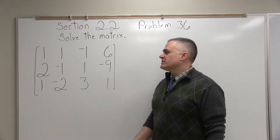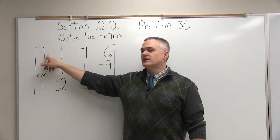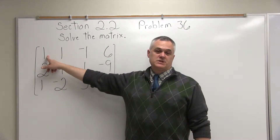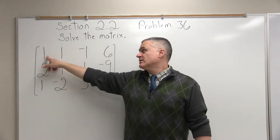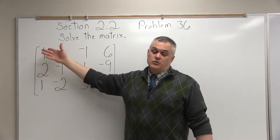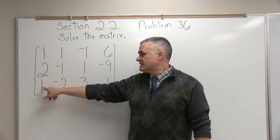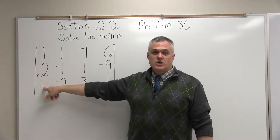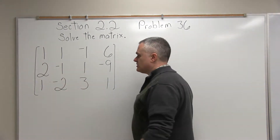So to solve a matrix like this, the first thing you want to do — step 1 — is get a 1 in the upper leftmost position, which we already have, just by luck. So we move right on to step 2. Step 2 says the other values in that first column, besides the 1, must get turned into 0s.